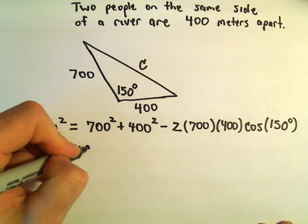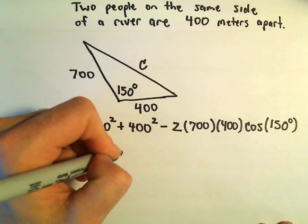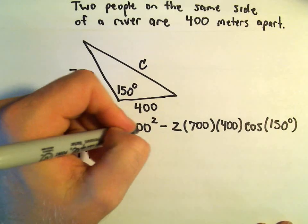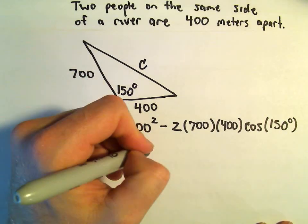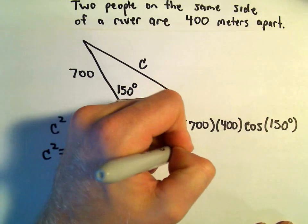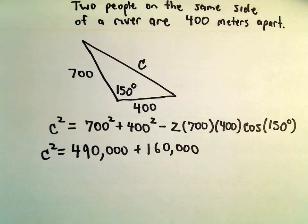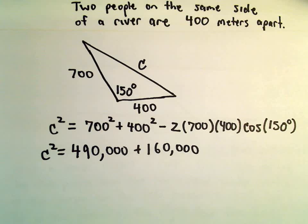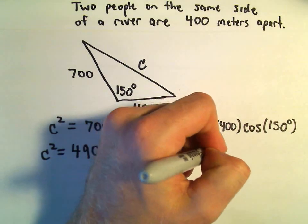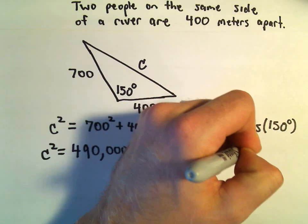So 700 squared, that'll be 490,000. 400 squared, that would be 160,000. So 2 times 700 times 400, that's going to be 560,000.